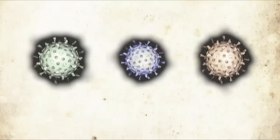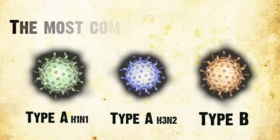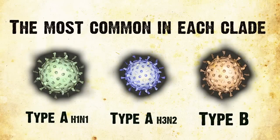How do you know what virus to put in the vaccine? Trick question — there are actually three viruses. You have to forecast and predict on a worldwide scale every year which are going to be the most common influenza viruses in each of the clades.